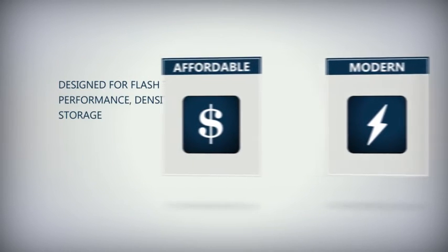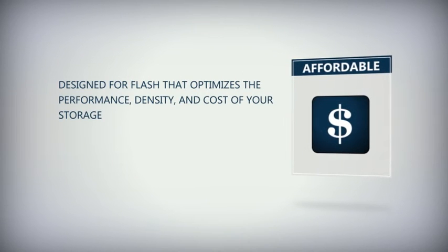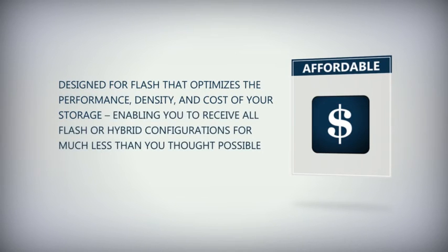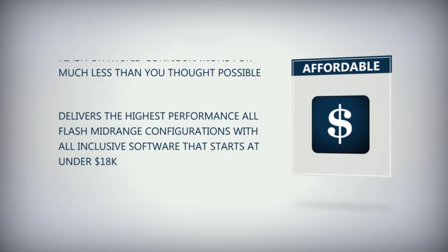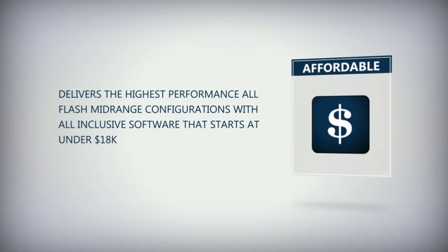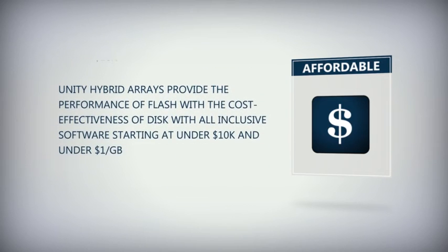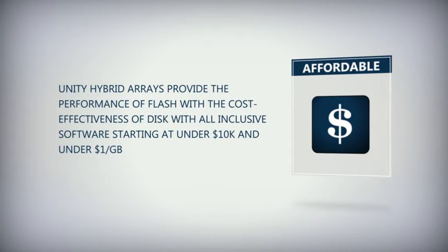Unity is affordable, designed for flash to optimize performance, density, and cost, enabling all-flash or hybrid configurations for much less than expected. It delivers the highest-performance all-flash mid-range configurations with all-inclusive software starting at under $18,000. Unity hybrid arrays provide the performance of flash with the cost-effectiveness of disk, with all-inclusive software starting at under $10,000 and under $1 per gigabyte.